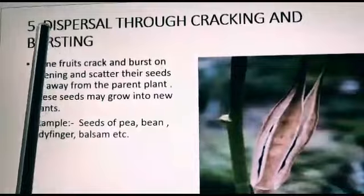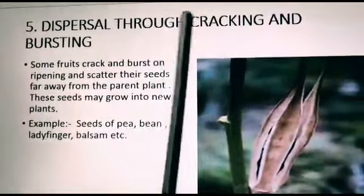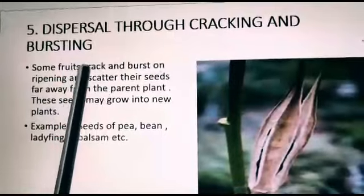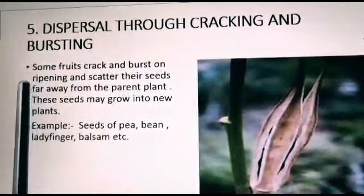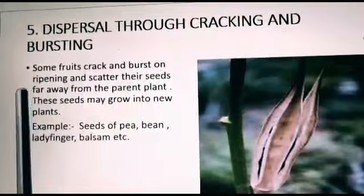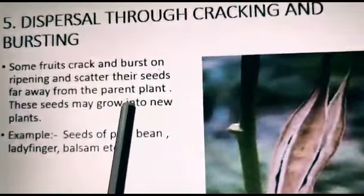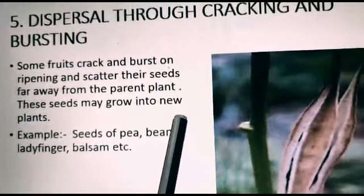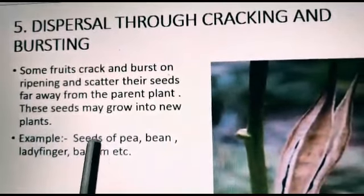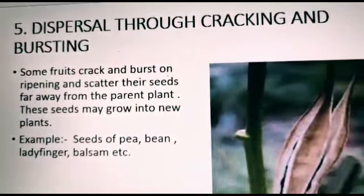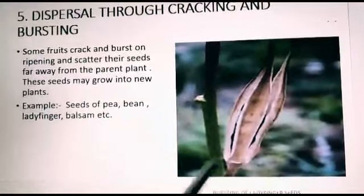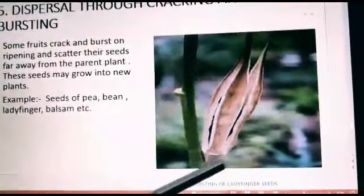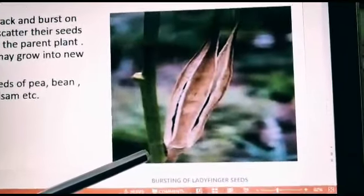Now we will discuss dispersion through cracking and bursting. Some fruits crack and burst on ripening and scatter their seeds far away from the parent plant. These seeds may grow into new plants. Examples: seeds of pea, bean, ladyfinger, balsam, etc. This is the picture of bursting of ladyfinger seeds. This is the picture of pea seeds.